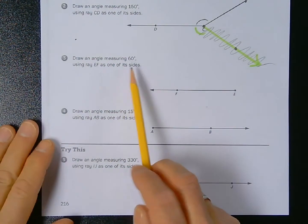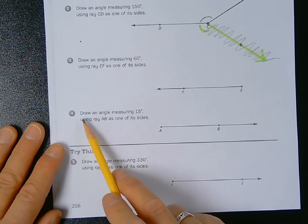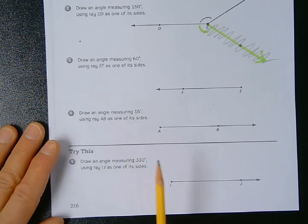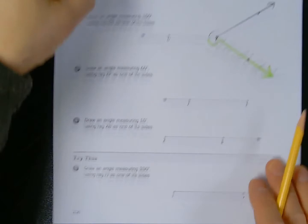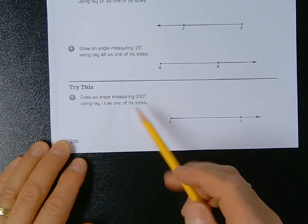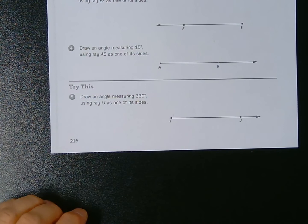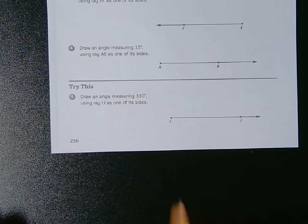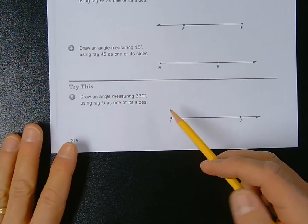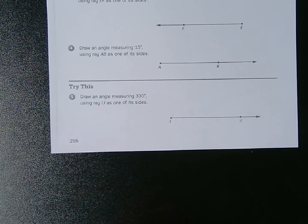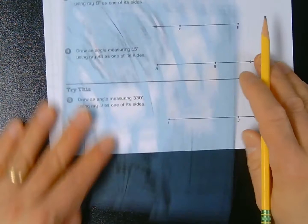Why don't you try problems three, four, and five on your own. Problem number three is 60 degrees so you know that's going to be acute. 15 degrees for problem number four is going to be very acute. And then problem number five says draw an angle measuring 330 degrees. Now that's going to be a very wide reflex angle. You might have to incorporate your full circle protractor here.